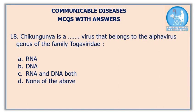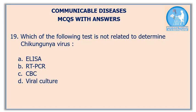Eighteenth question: Chikungunya is a type of virus that belongs to the alphavirus genus of the family Togaviridae — option A: RNA, option B: DNA, option C: RNA and DNA both, option D: none of the above. The correct answer is option A: Chikungunya is a type of RNA virus.